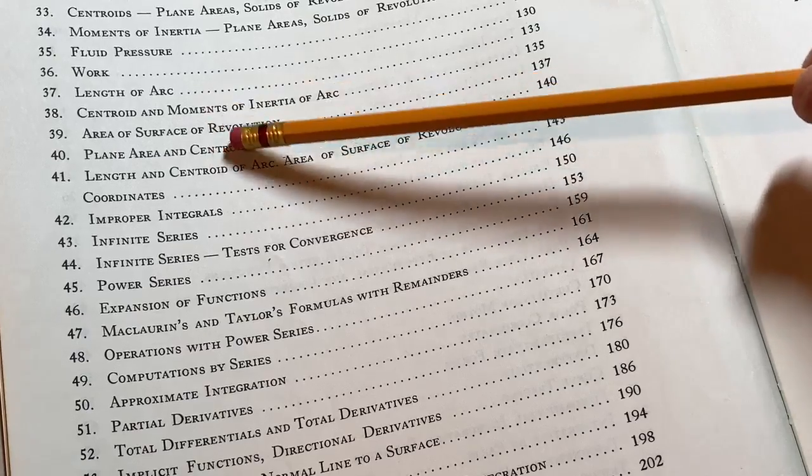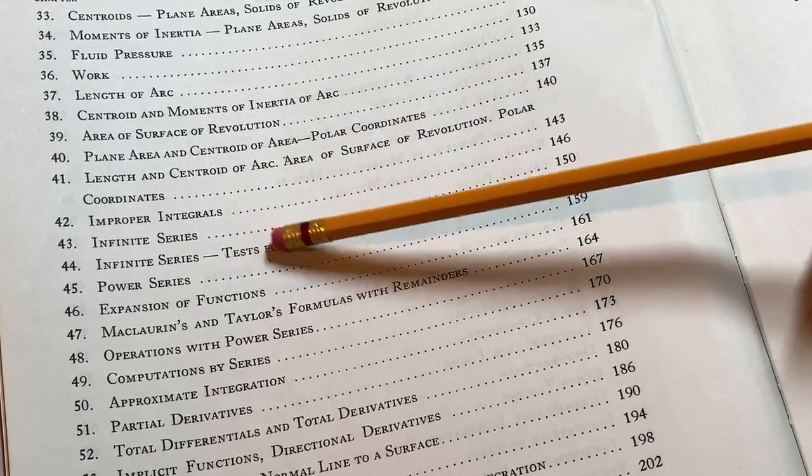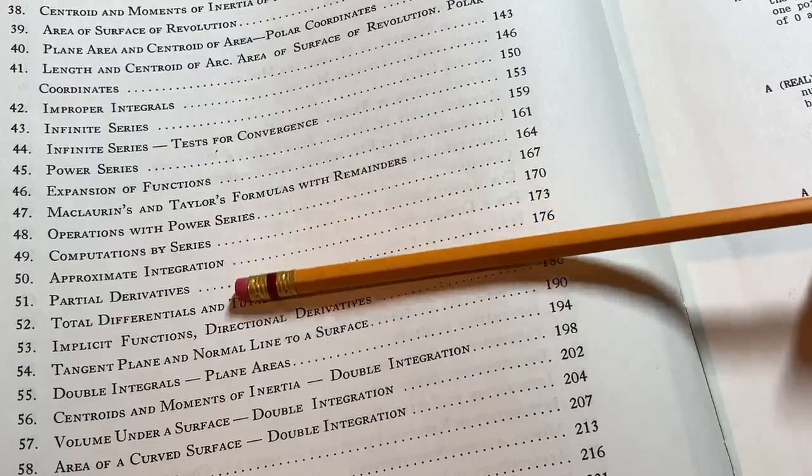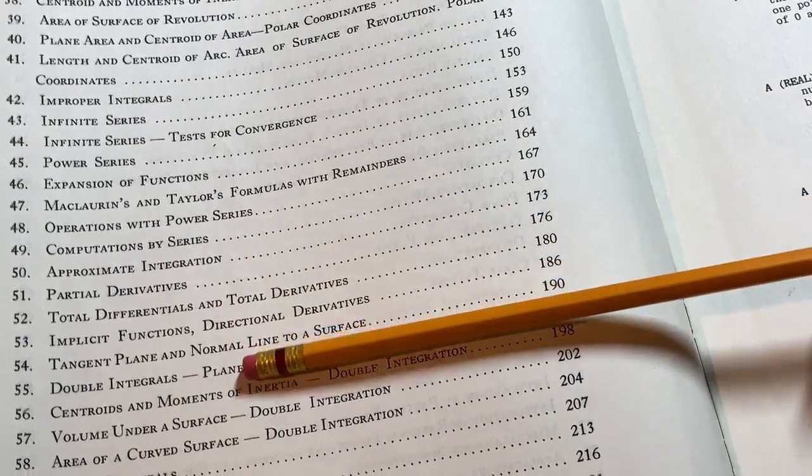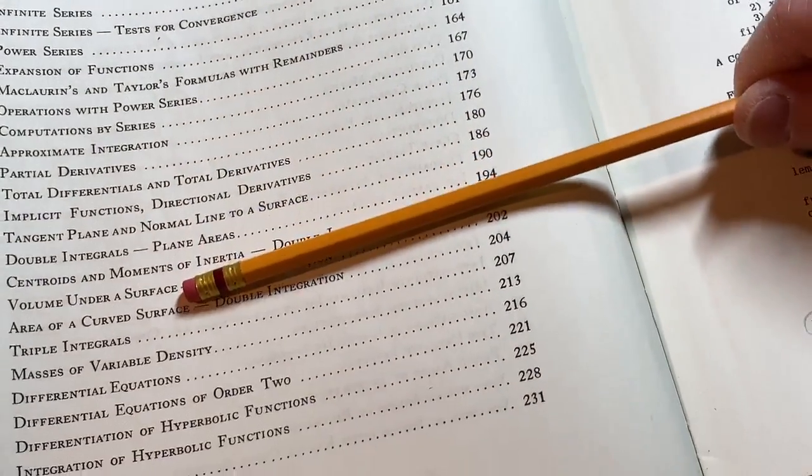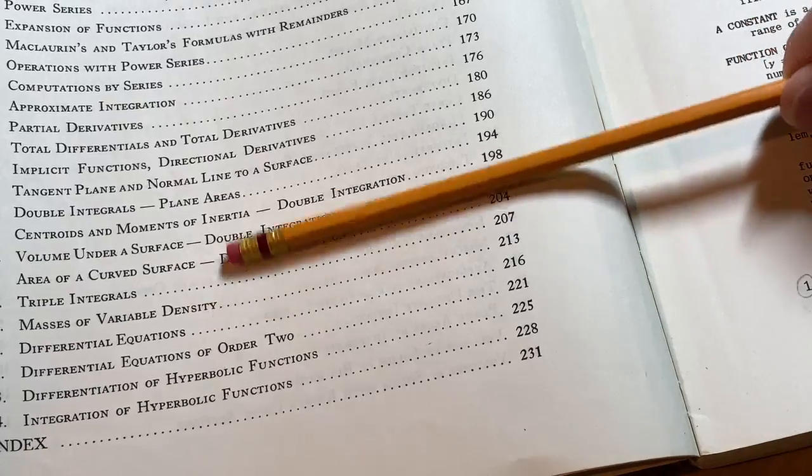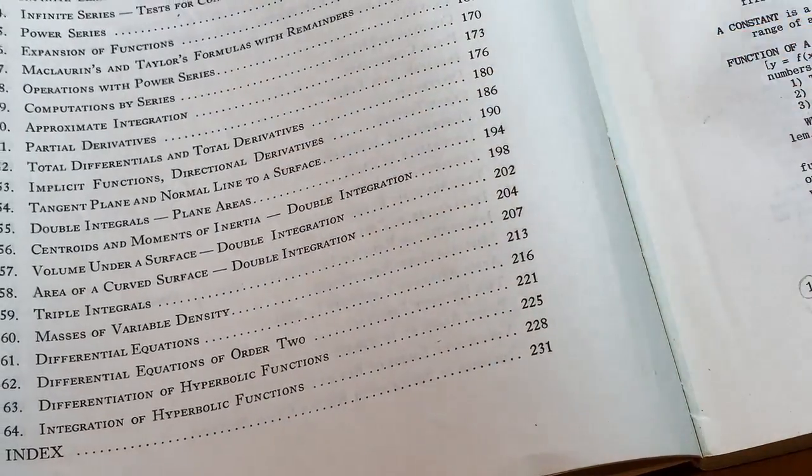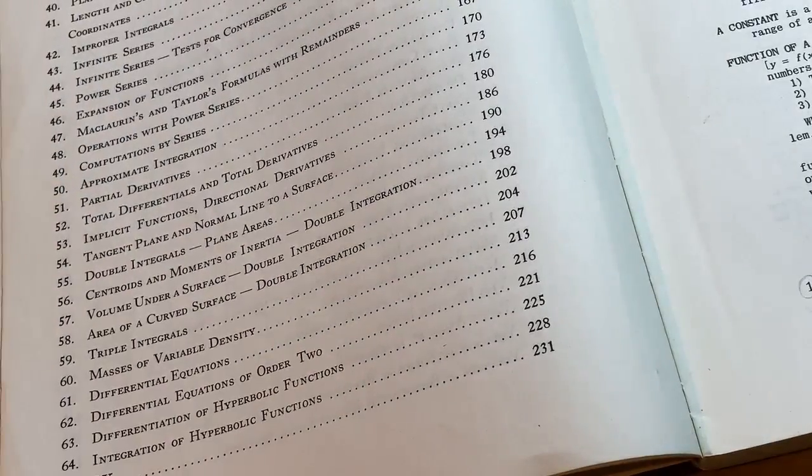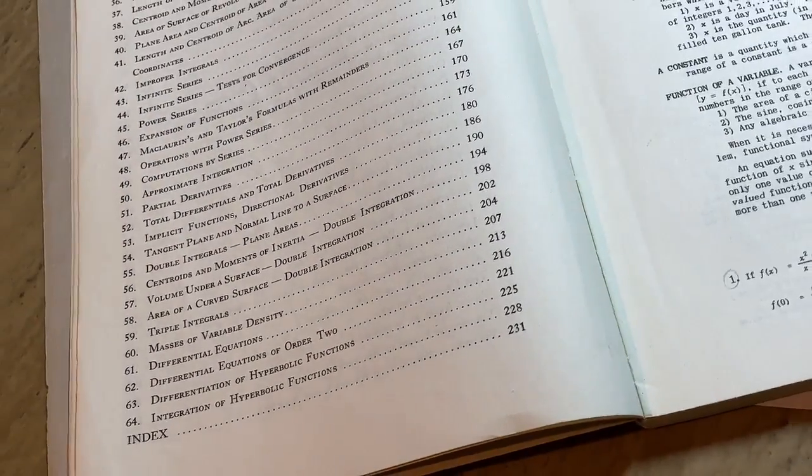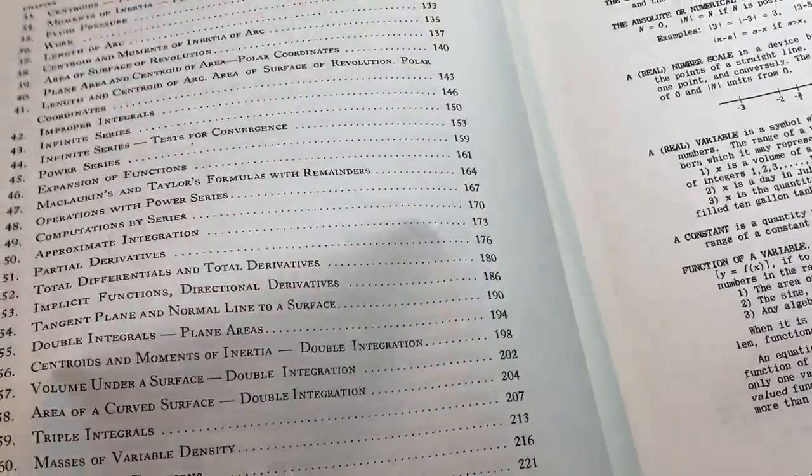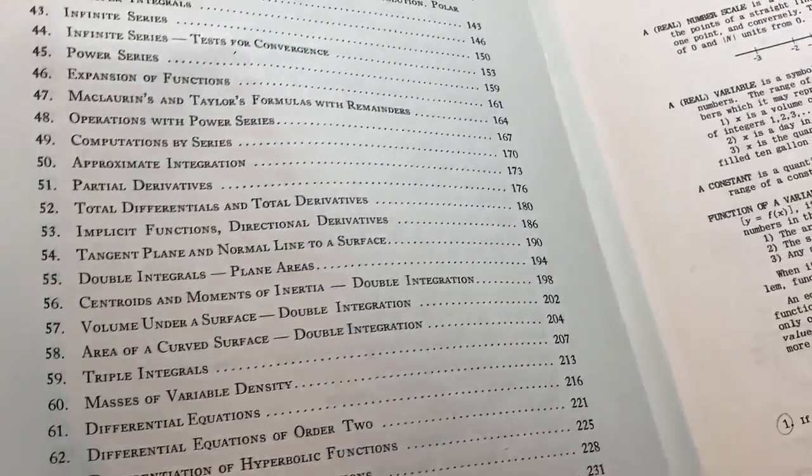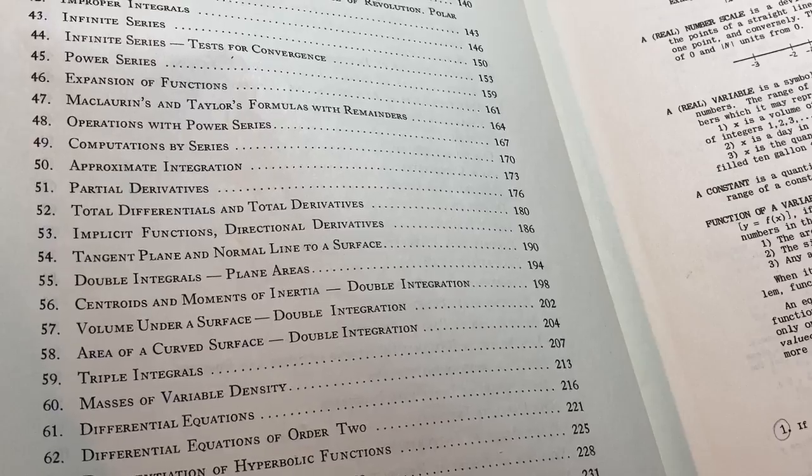There you can see some more of the contents. Fluid pressure, Calc 2 topic, series, more series. And then you even have some multivariable calc in here. Partial derivatives, triple integrals, differential equations. So it's got some calc 3 stuff. It doesn't have everything, but it has a lot. So it seems like it has quite a bit of calc 1, calc 2 topics, and then some selected topics from calc 3. It doesn't seem like it has a lot of vector calculus or anything like that, but it's got some double and triple integrals and stuff.